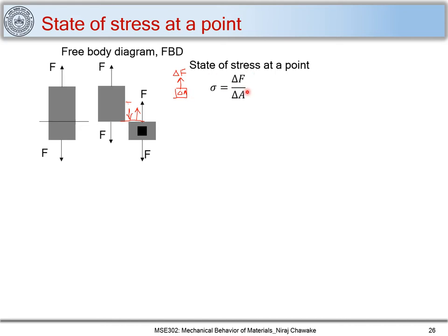To be more precise, when I want the stress at a point, I let delta A tend to zero and define stress as the limit of delta F upon delta A as delta A tends to zero. In this uniform situation the stress remains constant, but that may not always be the case.